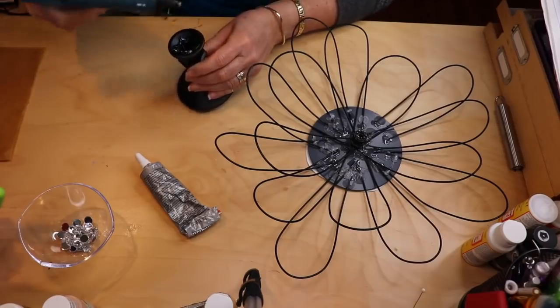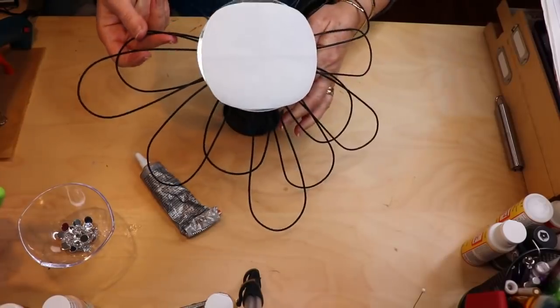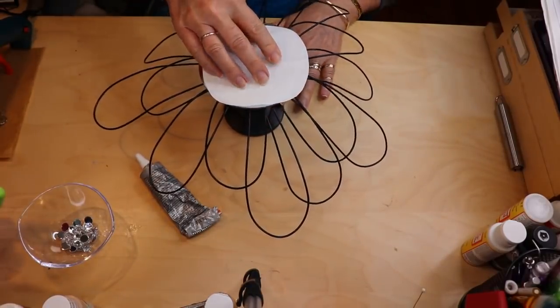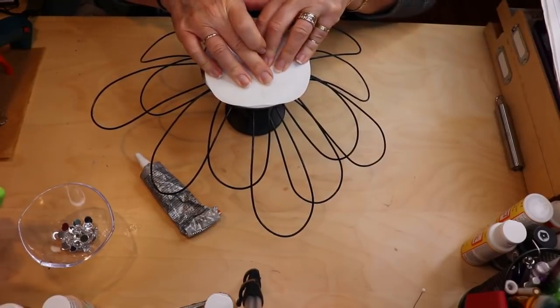Then you're going to flip your flower over and place it directly in there and make sure it's level. So you're going to have to hold on to it while that hot glue does its job.